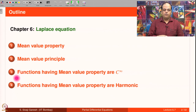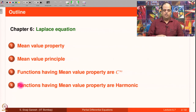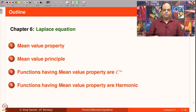In points 3 and 4 we are going to assume only continuity of the function. If a continuous function has mean value property, it automatically follows that it is C-infinity. If a continuous function has mean value property then it is automatically a harmonic function.